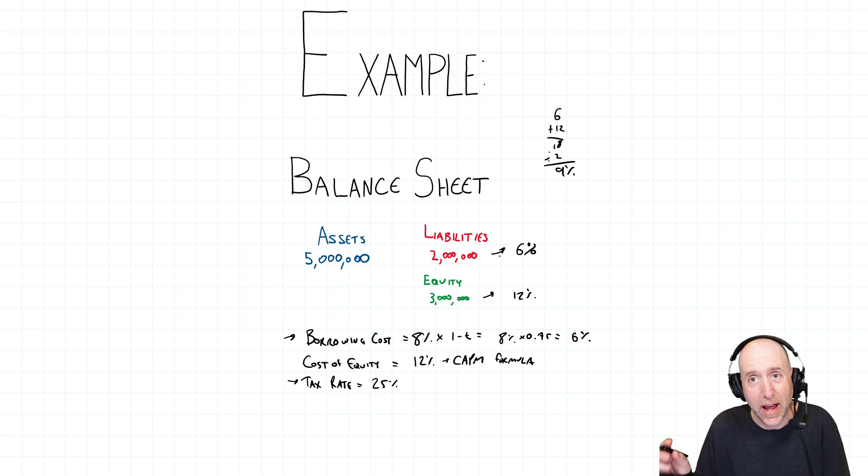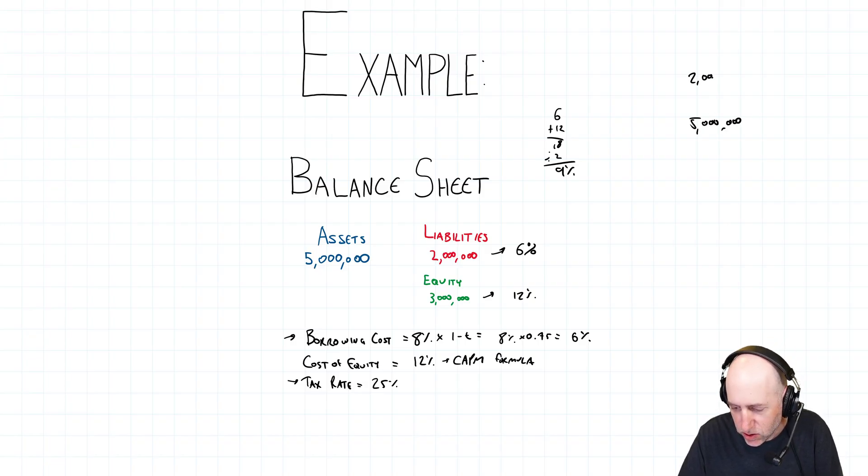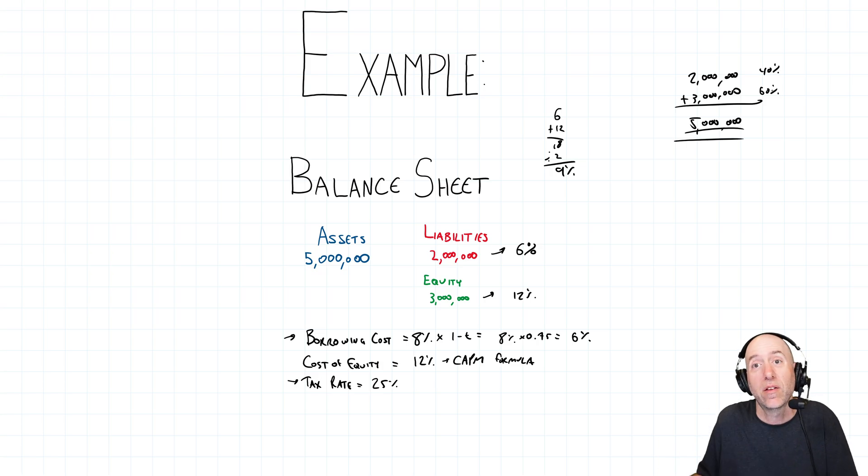This is where the weighted average comes in. If I look at my total liabilities and equity, it's $5 million. Just add the two together. My debt is 2 and my equity is 3 to total 5. Well, of this $5 million, you can do some quick math. 2 divided by 5 is 40% and 3 divided by 5 is 60%. I'm 40% debt, 60% equity. That's the relative weight.